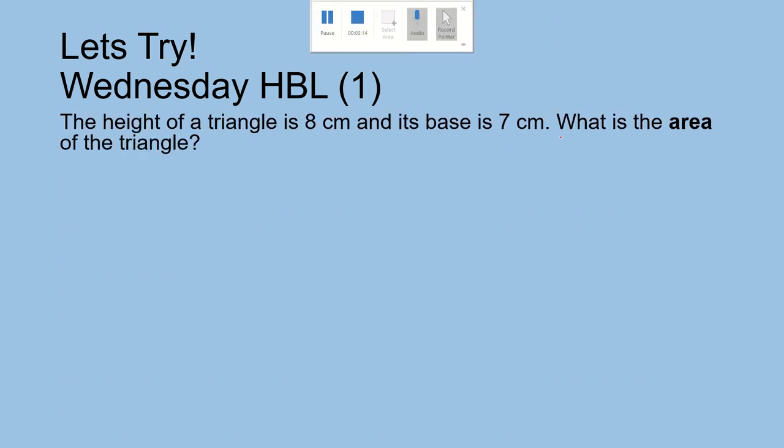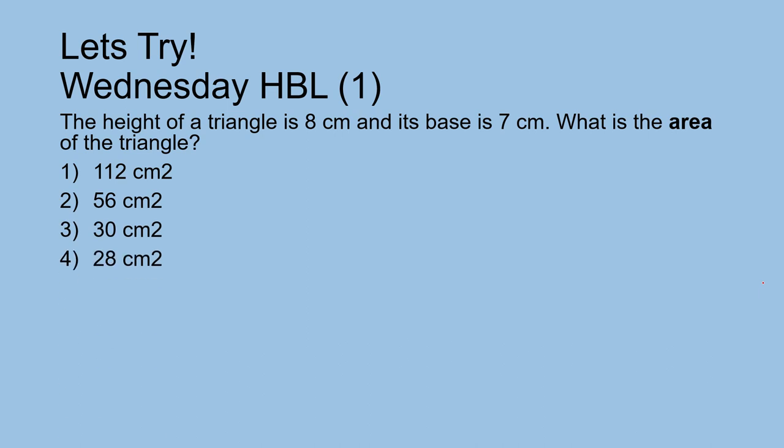The height of a triangle is 8 cm and the base is 7 cm. What is the area of the triangle? This is very easy. What is the formula for area? Formula is half times base times height. Very easy, next.